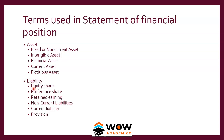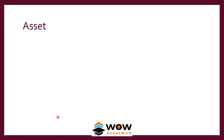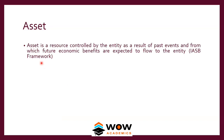An asset is defined as a resource controlled by the entity as a result of past events and from which future economic benefits are expected to flow to the entity. Anything the company has the ability to control — land, a building, a copyright, a vehicle — can be an asset. Employees, however, cannot be considered assets because they are not controllable; unlike a machine, an employee has their own will and can leave the company.